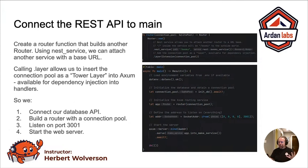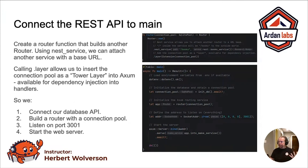Axum does this using a service under the hood called Tower. Tower is a very powerful system. It in turn utilizes Hyper, and Tokio is underneath that. This is all written by the Tokio team. Axum, as a result, utilizes this and offers a pretty nice clean API.